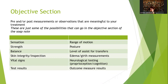Posture information goes in the objective section if it's relevant to the current treatment — for example, forward shoulder and head posture when treating shoulder and neck pain. Level of assist for transfers and gait, the assistive device used for gait, edema and girth measurements, neurological testing like proprioception and cognition, and formal outcome measure results also go in the objective section. Make sure you get those pre and post measurements.